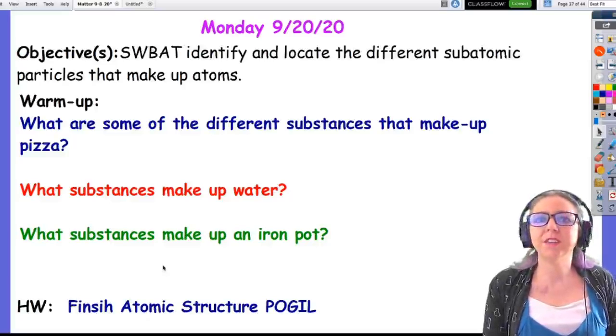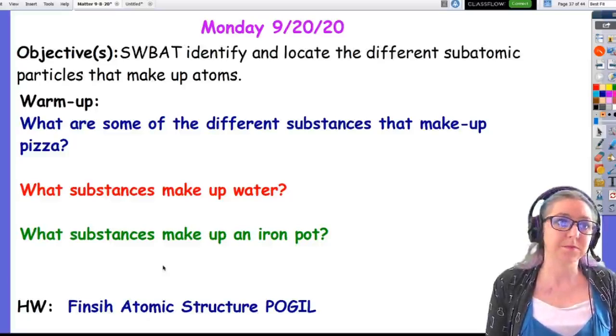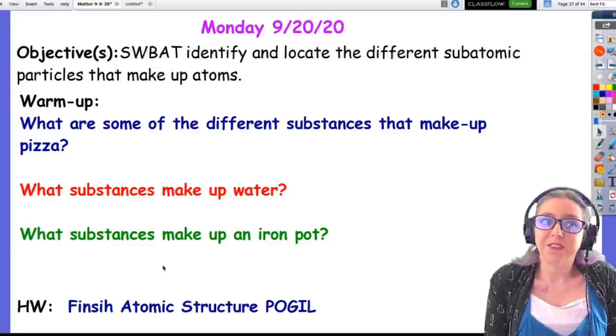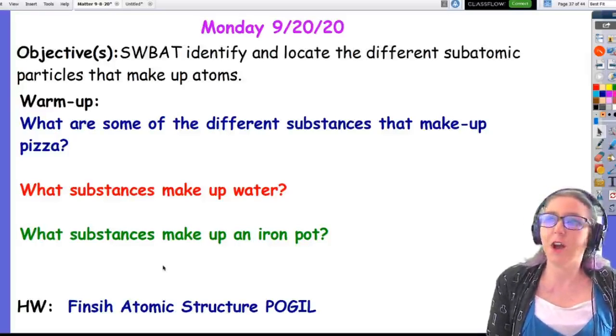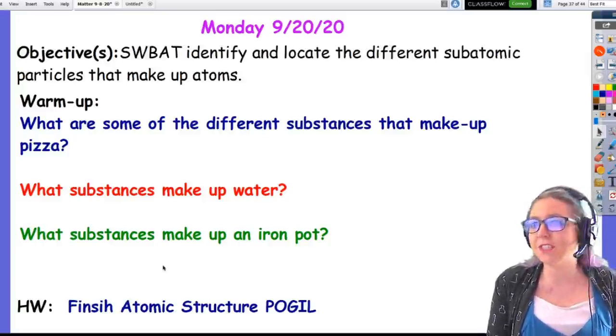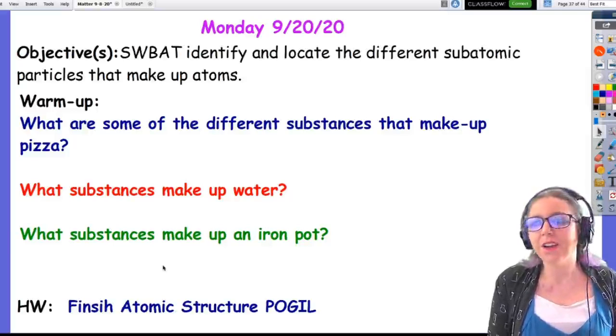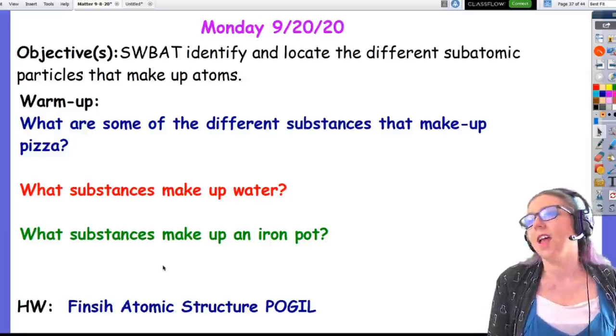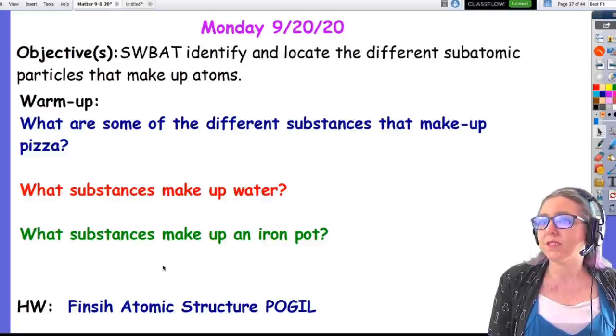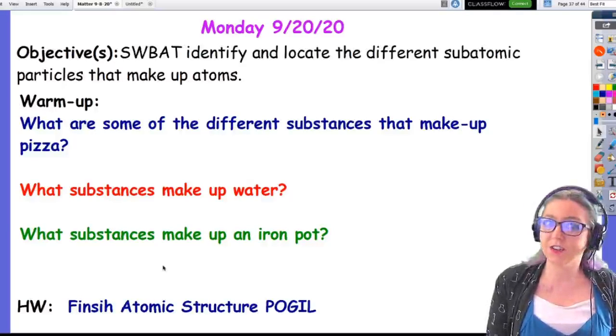We were really thinking about what different substances are made up of. Everything is made up of something. What are some of the different things that pizza is made out of? Almost everyone answered the same: dough, tomato sauce, cheese. We got a few different answers like yeast, flour, toppings. Then the second question was what substances make up water? Again, we almost all agreed, oxygen and hydrogen.